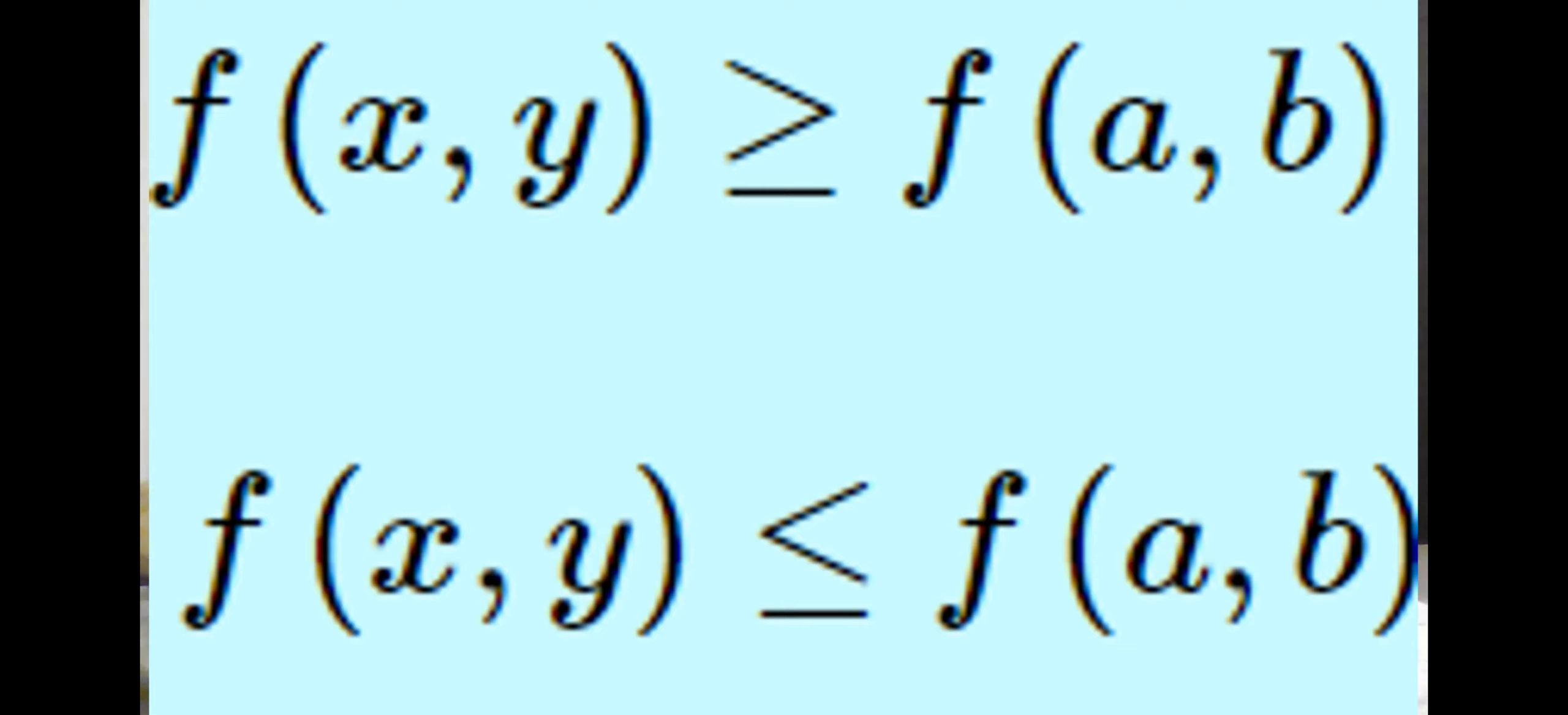a point is the relative minimum if and only if f(x,y) is greater than or equal to f(a,b) for all points sufficiently close to (a,b). And by similar reasoning, the relative maximum is about the same, but the difference in the formal statement is that the sign is flipped, so it must be less than or equal to for the point to be maximum.